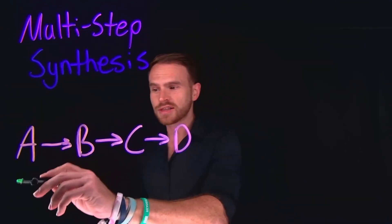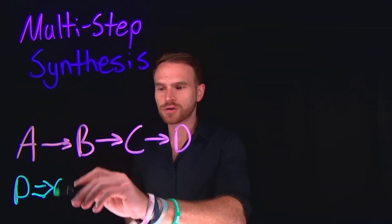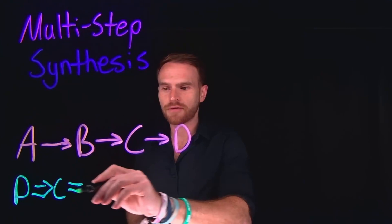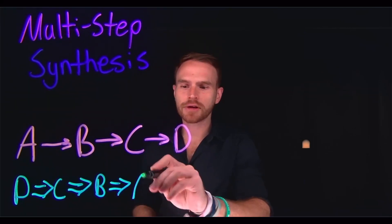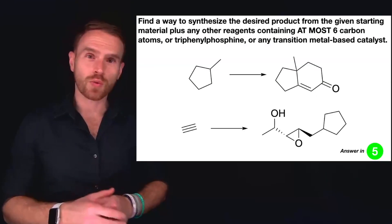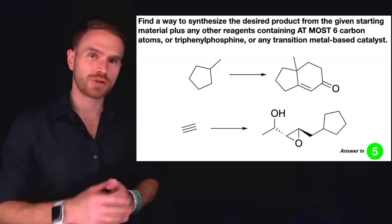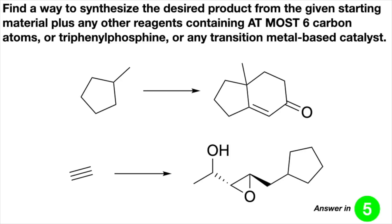Using the retrosynthetic analysis approach, we can convert in the backwards direction from D to C to B to A, and I'm going to show you all the tips and tricks you need to succeed on your exams. Recall from the previous video, we left these two synthetic approaches unsolved. So if you haven't had a chance yet, pause the video, try these problems independently, and then resume this video to check your answers.